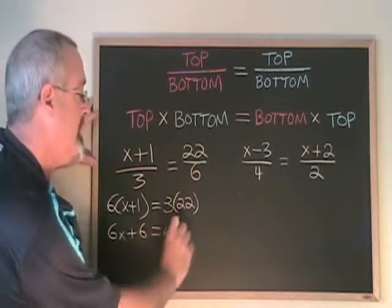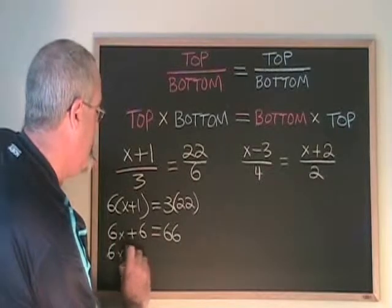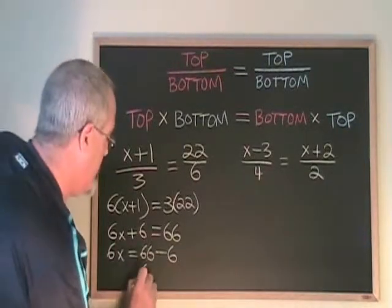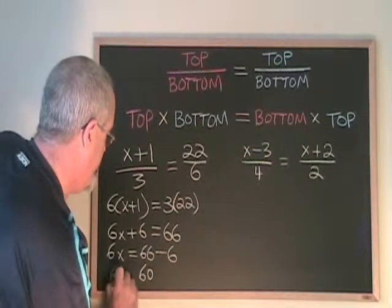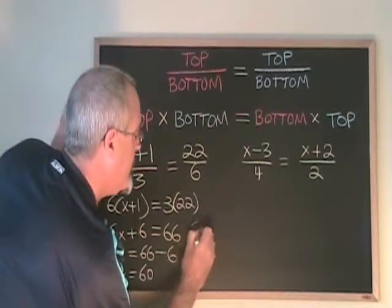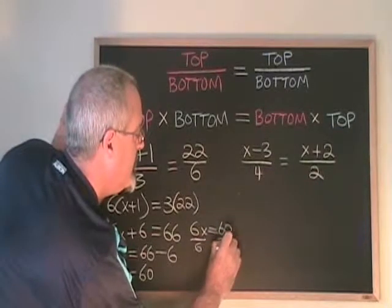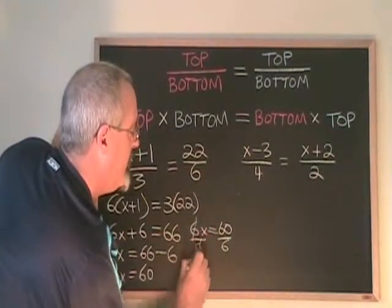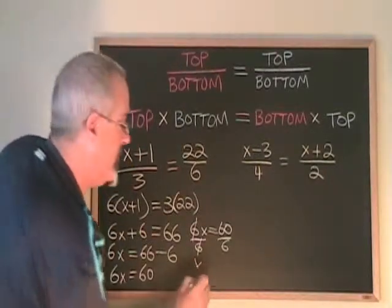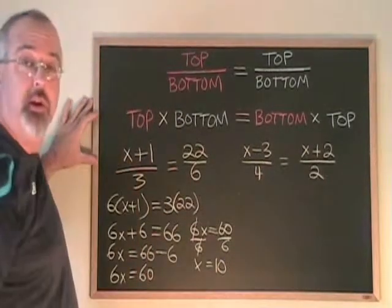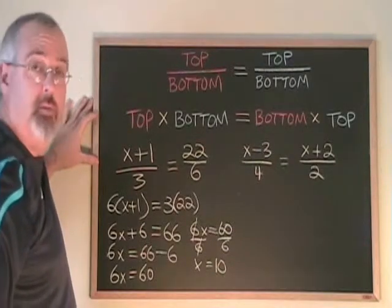Let's move the 6 to the other side. 6x equals 66 minus 6, which is 60. If 6x equals 60, we divide both sides by 6. Cancel. x is equal to 60 divided by 6, which is 10. And if we plug that 10 into the x position in our original proportion, it will verify.